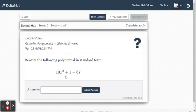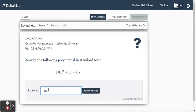So now we have 10x squared plus 1 minus 6x. So when the 10x squared is in the proper location. 10x squared again shift 6 to the caret 2.